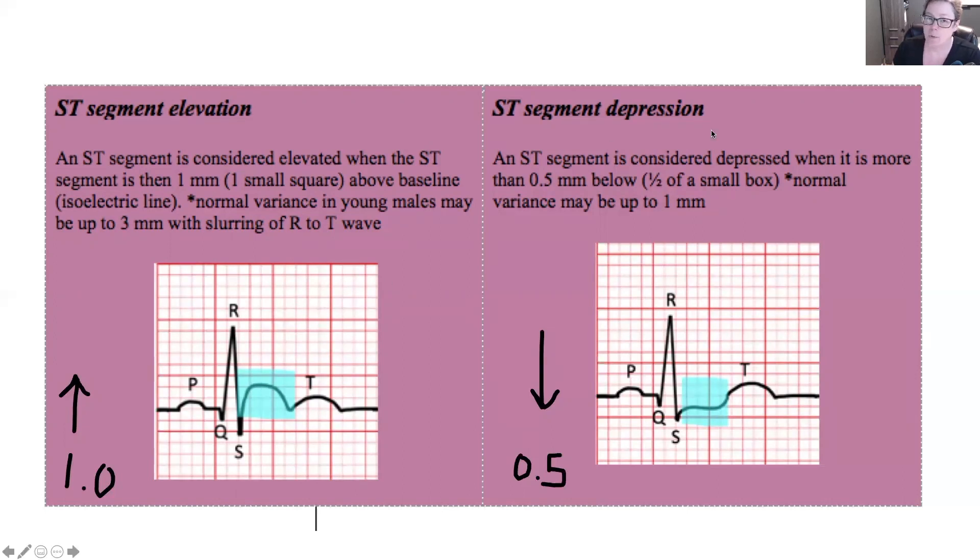ST segment depression is when the ST segment goes below isoelectric or baseline. And so here we have our isoelectric line, and you're like, well, I expect to see it right here, but it's not there. In fact, it's below. So it doesn't have to even go below as far as the elevation. It only has to go below 0.5 of a millimeter, which is half of a small box. That's it. So this line is pretty sensitive, and it's a great indicator. It tells us whether or not we have injury and insult in the myocardial tissues.